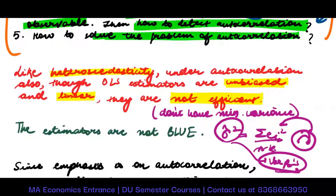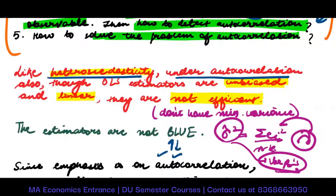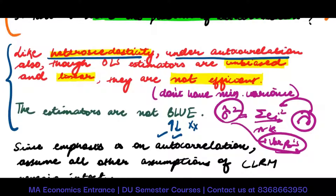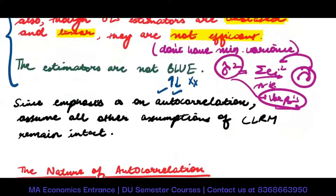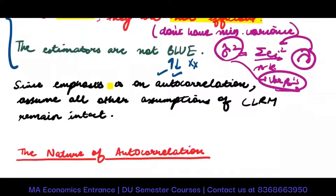Because the variance of the betas gets affected, autocorrelation — just like heteroscedasticity — has the properties of being linear and unbiased, but the estimators are not efficient; they do not have the minimum variance. Since the emphasis is on autocorrelation, we assume all other assumptions of the CLRM remain intact.